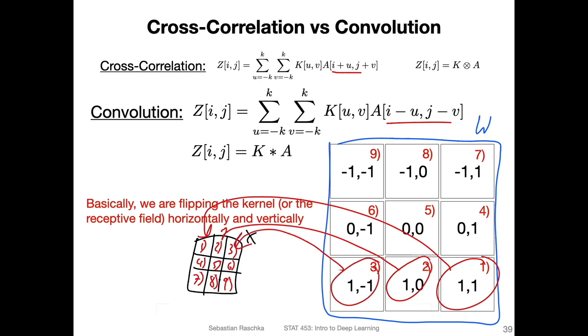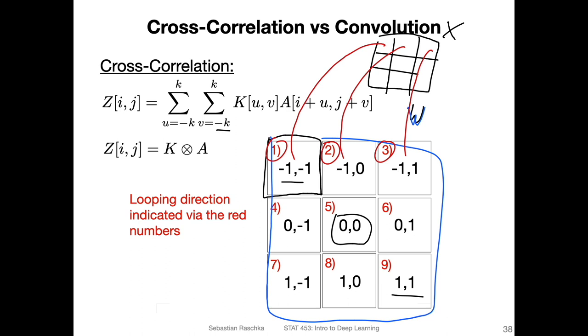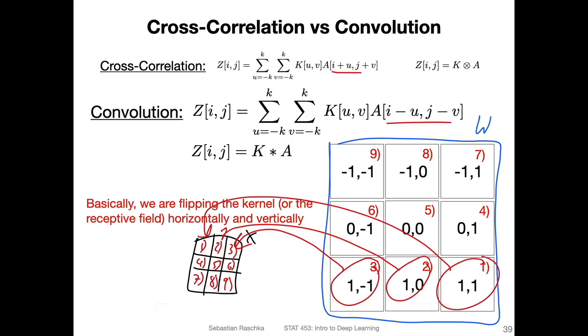The difference is, you can see that it's inverted. In cross-correlation, we go like this. And in convolution, we would go like this. That's the main difference.